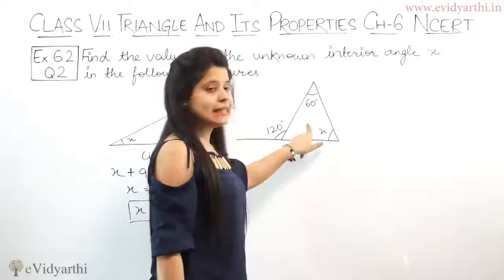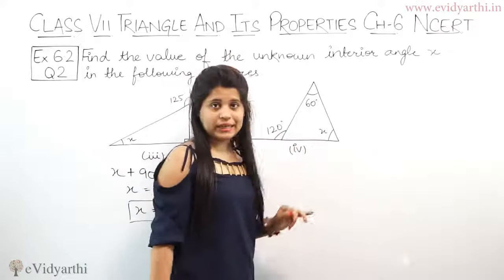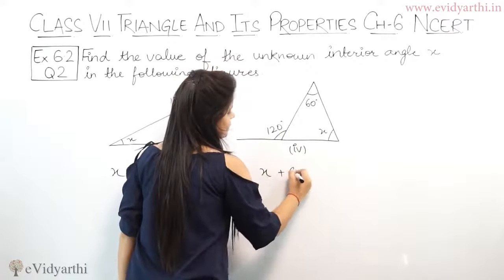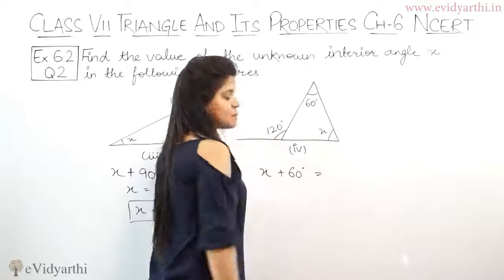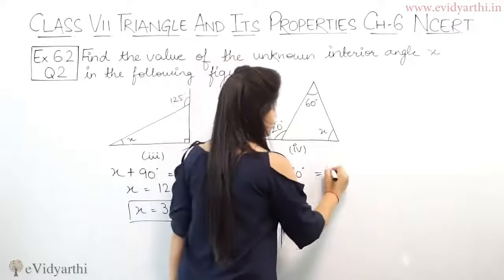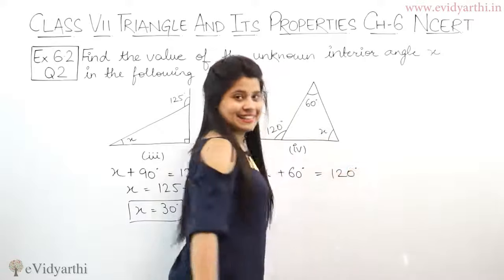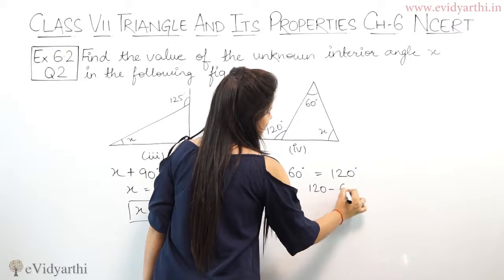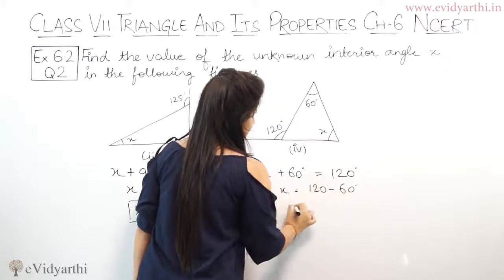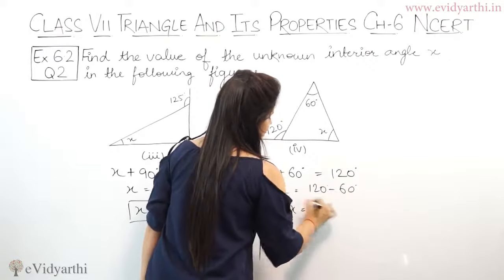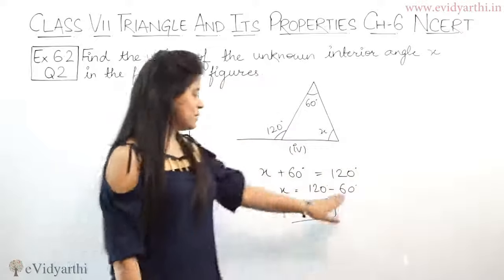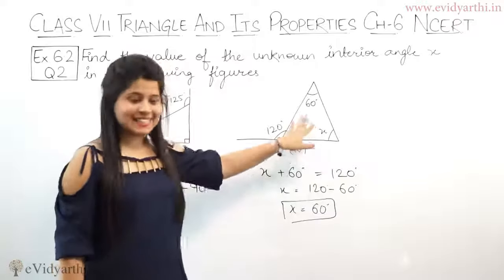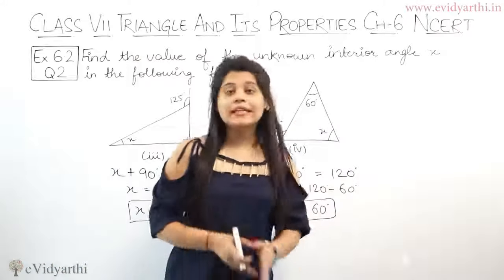Again, interior angle x, exterior given as 120 degrees, and another angle is 60 degrees. Using the exterior angle property, x plus 60 degrees equals 120 degrees. So x equals 120 minus 60, which means x equals 60 degrees. So x is 60 degrees.